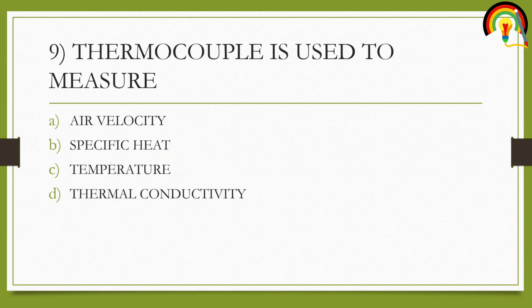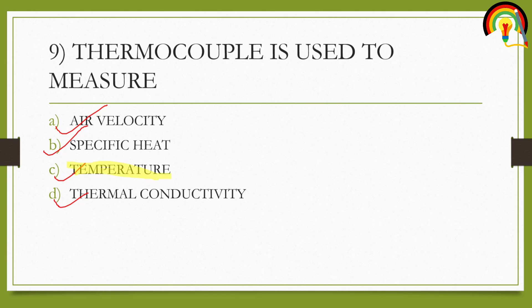The next question asks what a thermocouple is used to measure. The options are: A) air velocity, B) specific heat, C) temperature, and D) thermal conductivity. A thermocouple is always used to measure the temperature of a product — so the answer is C, temperature.